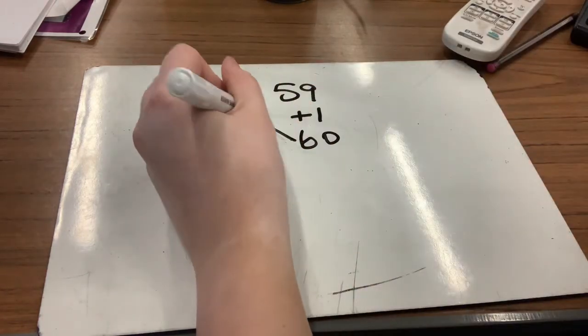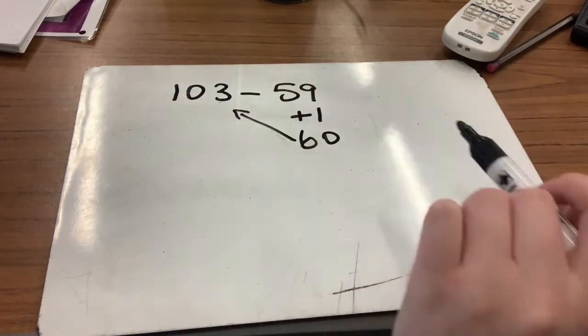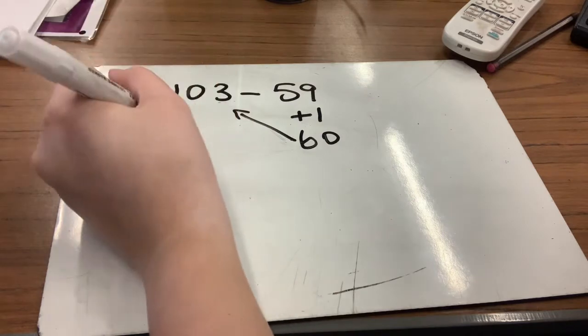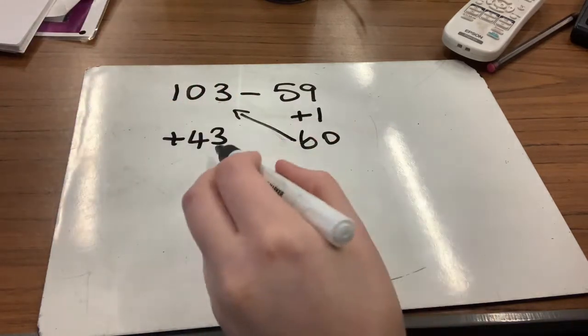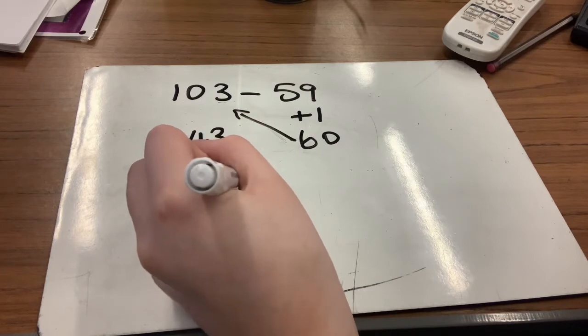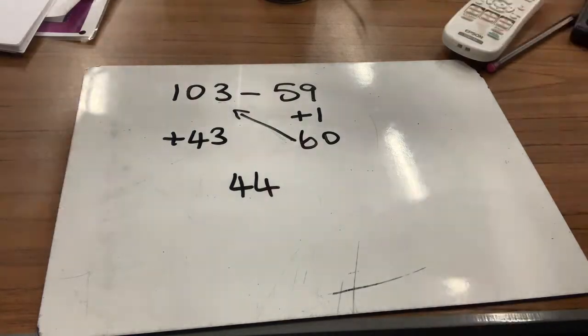Now we need to work out how to get from 60 all the way up to 103. So I know that I need to add on four tens to get up to 100, or 40, and then my three units left over. So it would be plus 43. I know that I counted on one and then I added 43 as well, so my total would be 44. So if you got that, give yourself a tick.